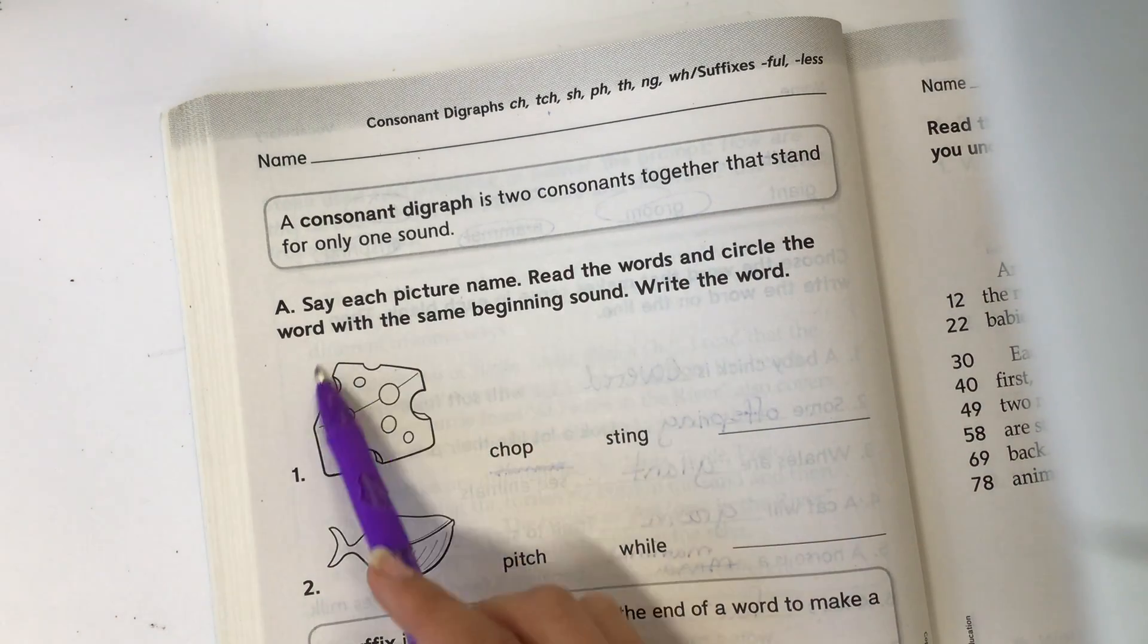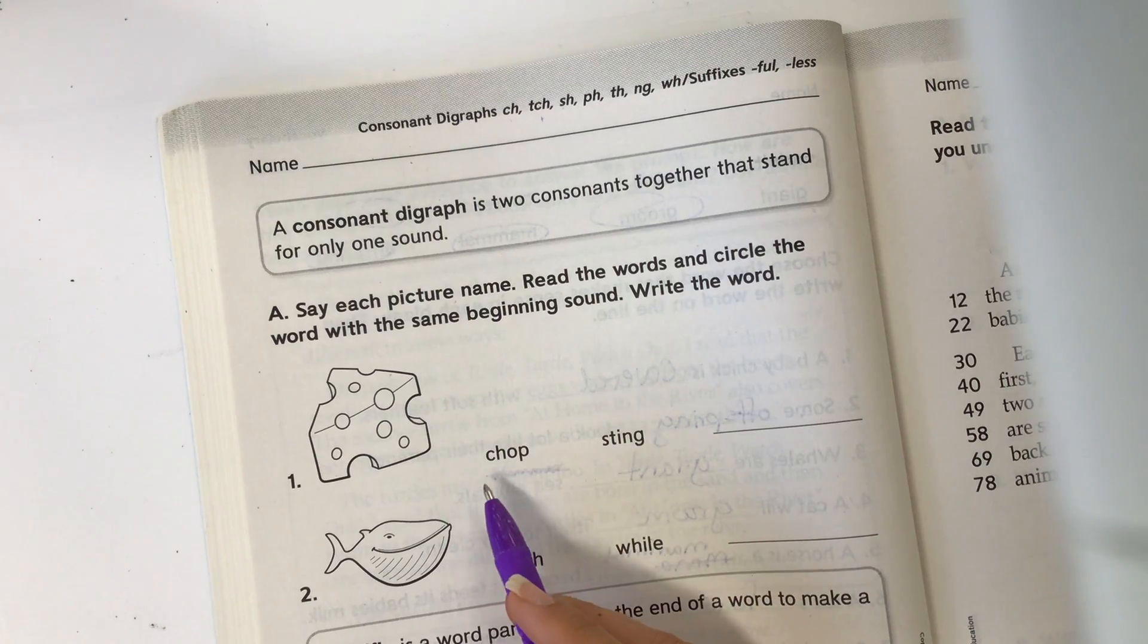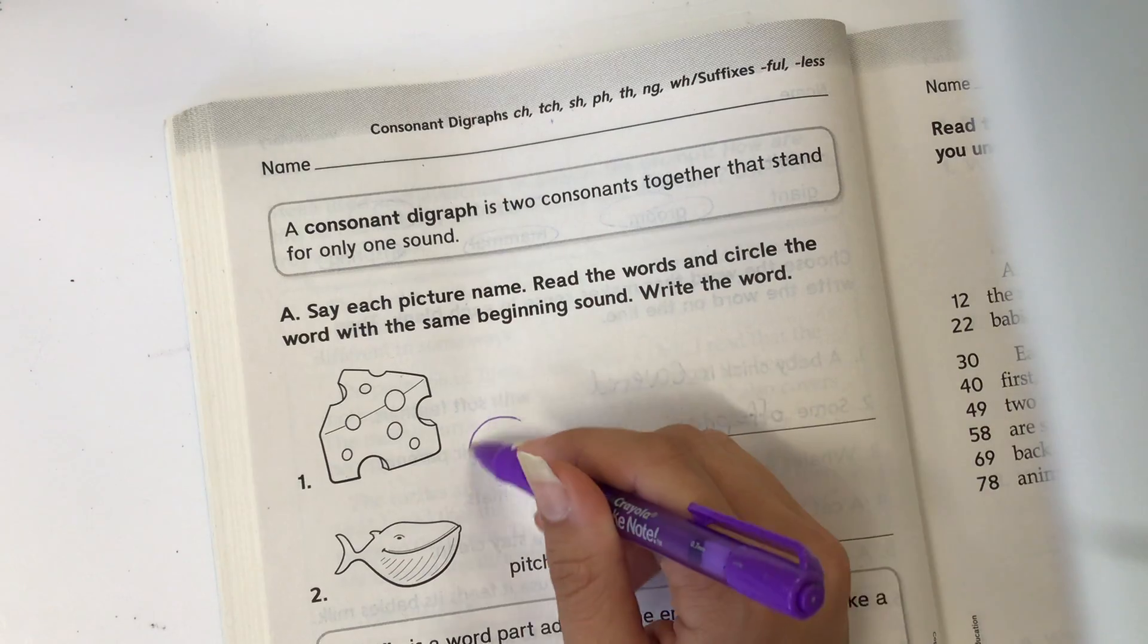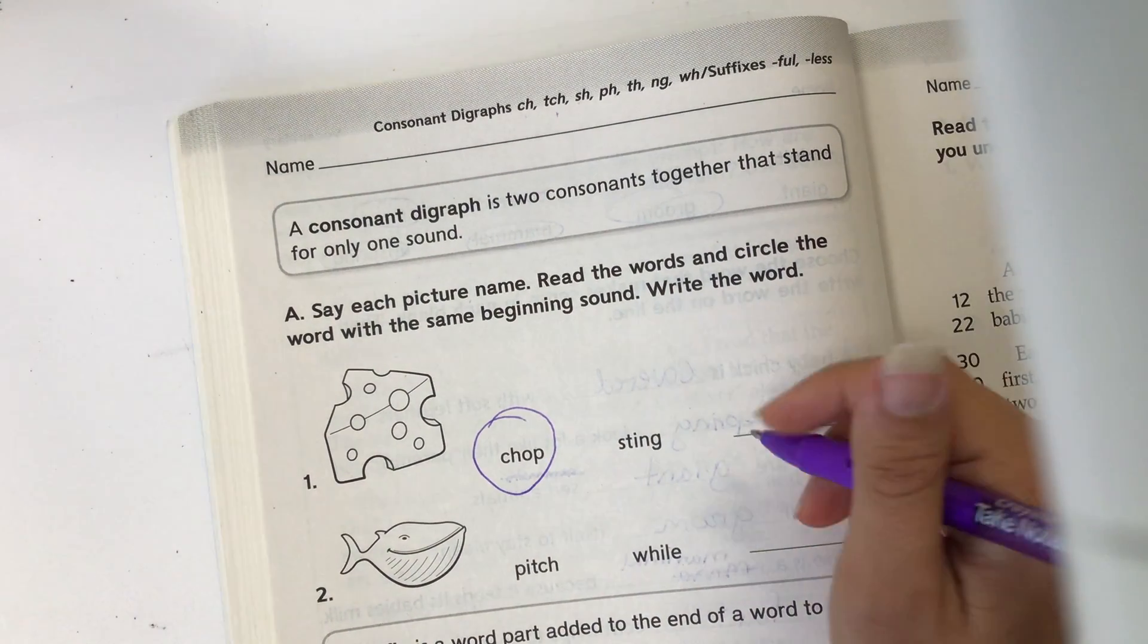So this is cheese, ch, ch, cheese. The first sound I'm hearing is ch. It says read the words and circle the word with the same beginning sound. So we're going to circle this one because it has the same beginning sound, and then we're going to write the word.